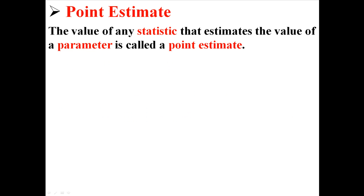First of all, point estimates. The value of any statistic that estimates the value of a parameter is called a point estimate. For example, the sample mean that estimates the population mean. The sample mean is our statistic, the sample mean is our point estimate, and the population mean is our parameter.